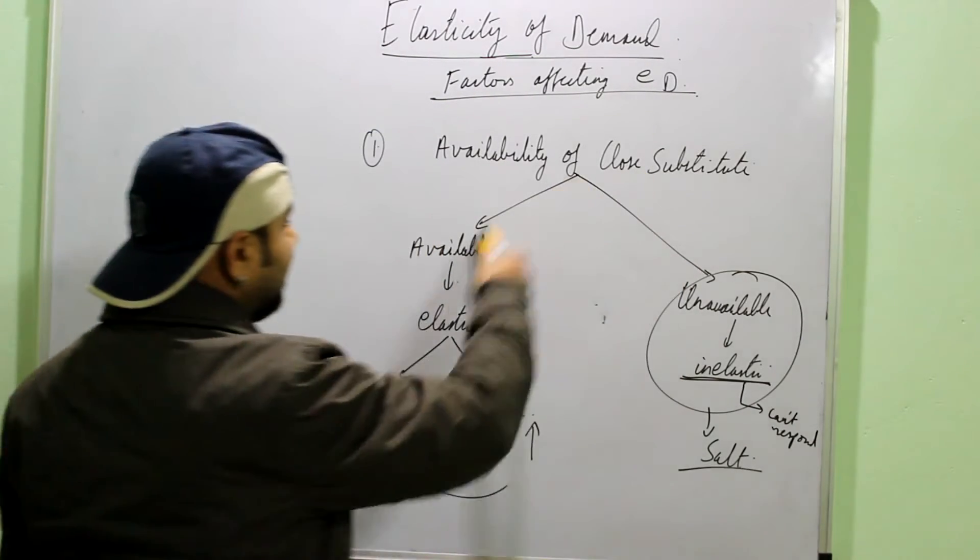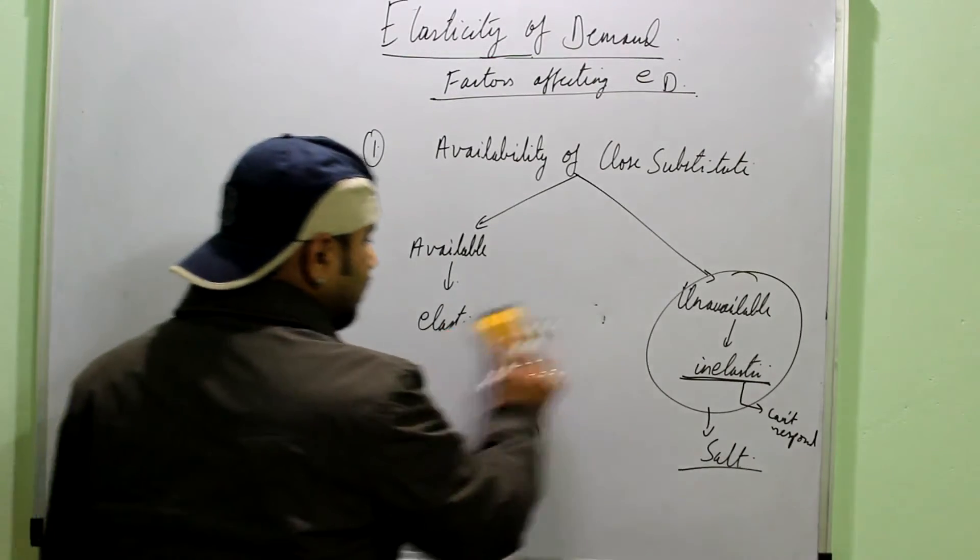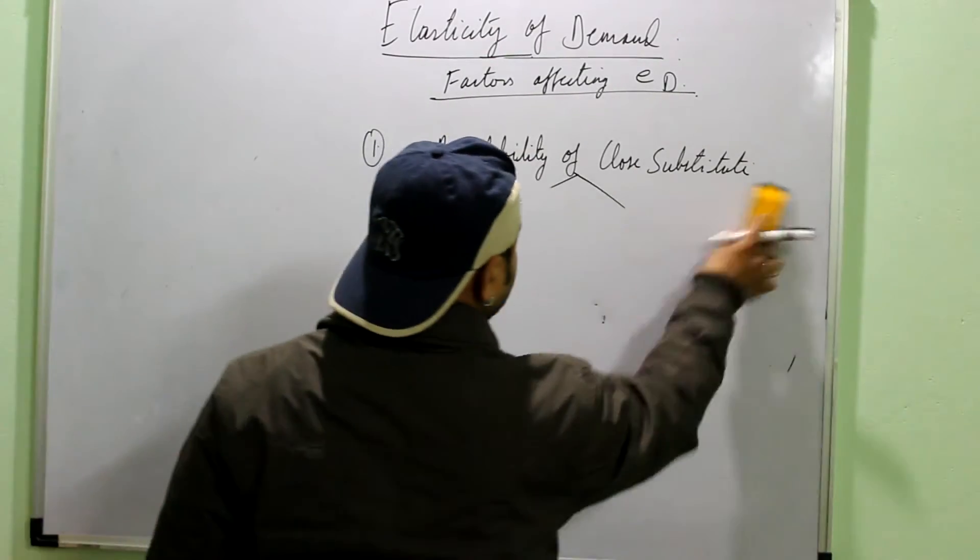When you are explaining them, you can make it like this. Sort of flow chart and then line you can write, explanation you can write about any one aspect. Available or not available.